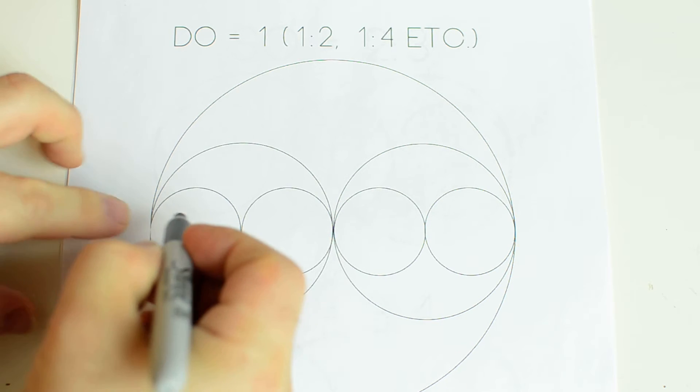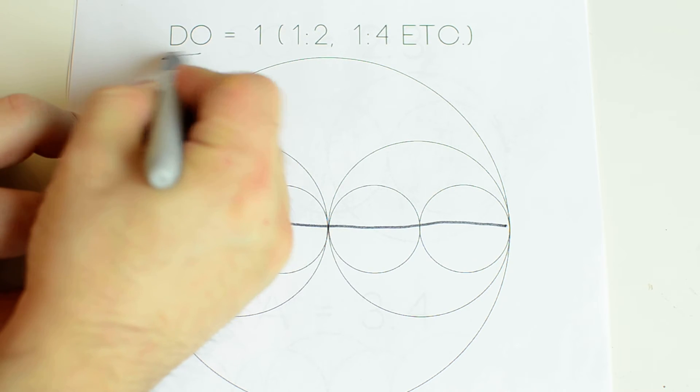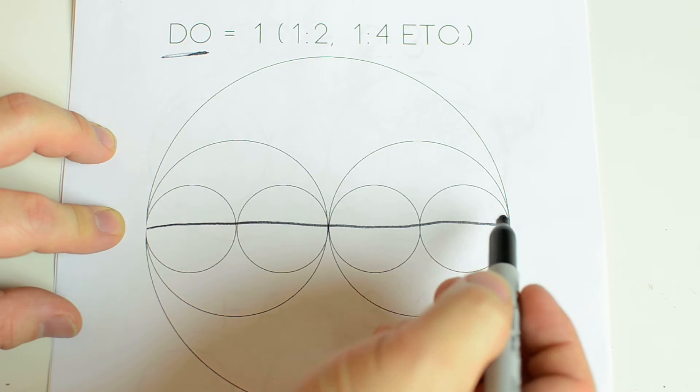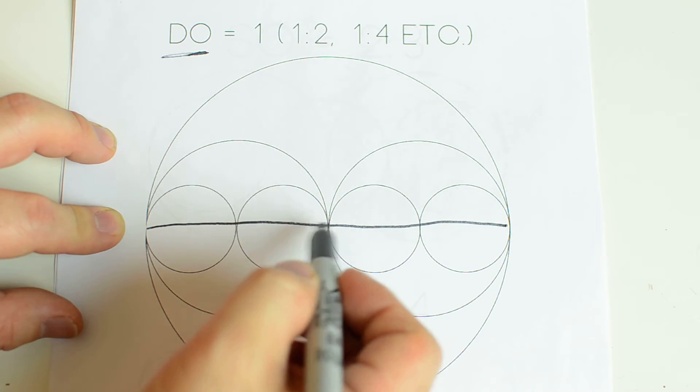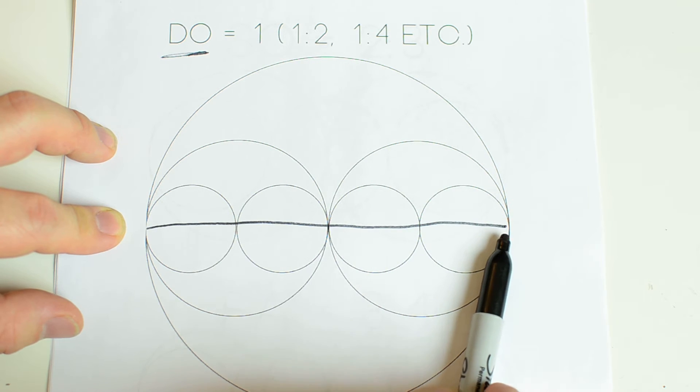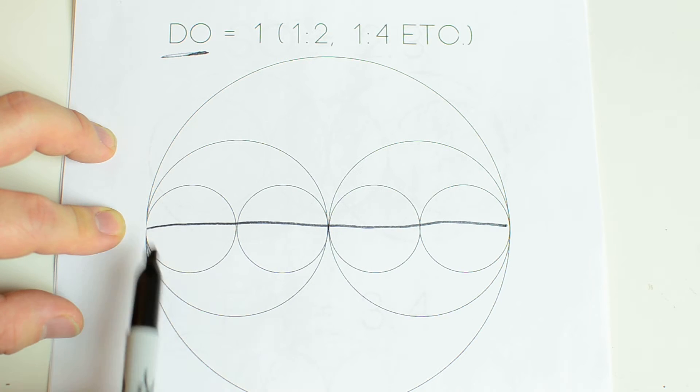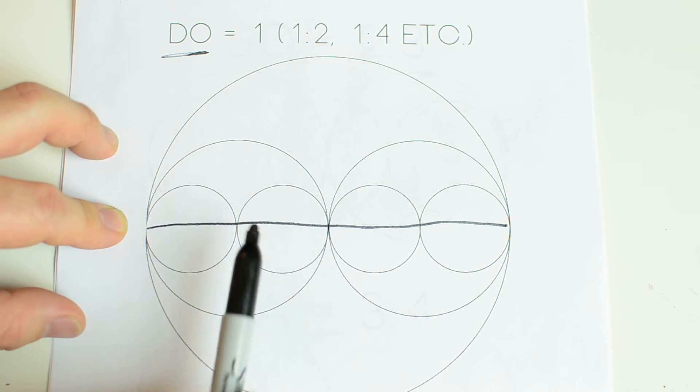But this is our length of string here. This is do. Do is the entire length of string, or half of it, or a quarter of it. Again, any time a number doubles or halves, it's the same note. So this is do, this half is do, this is do, just in different octaves. This is a lower do, this is a higher do, and this is a higher do.